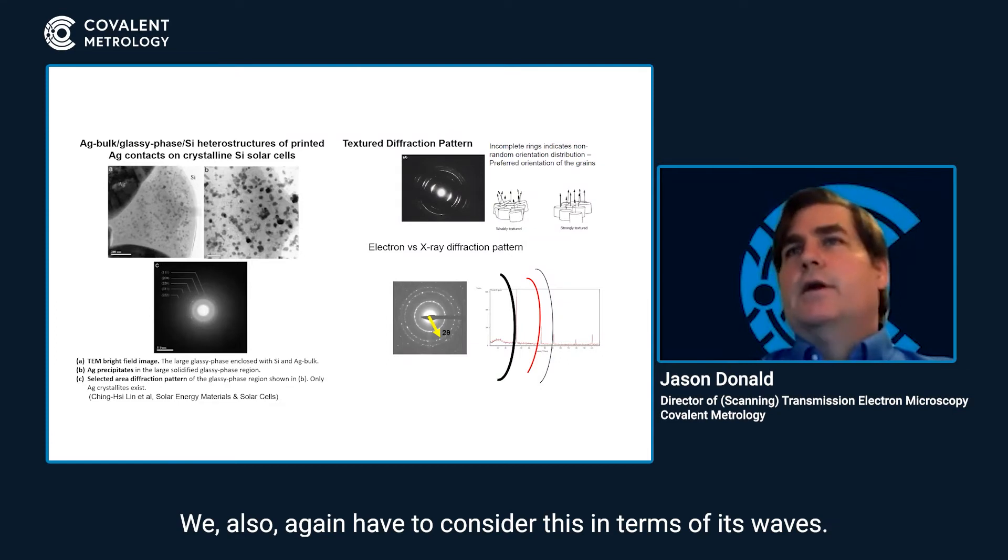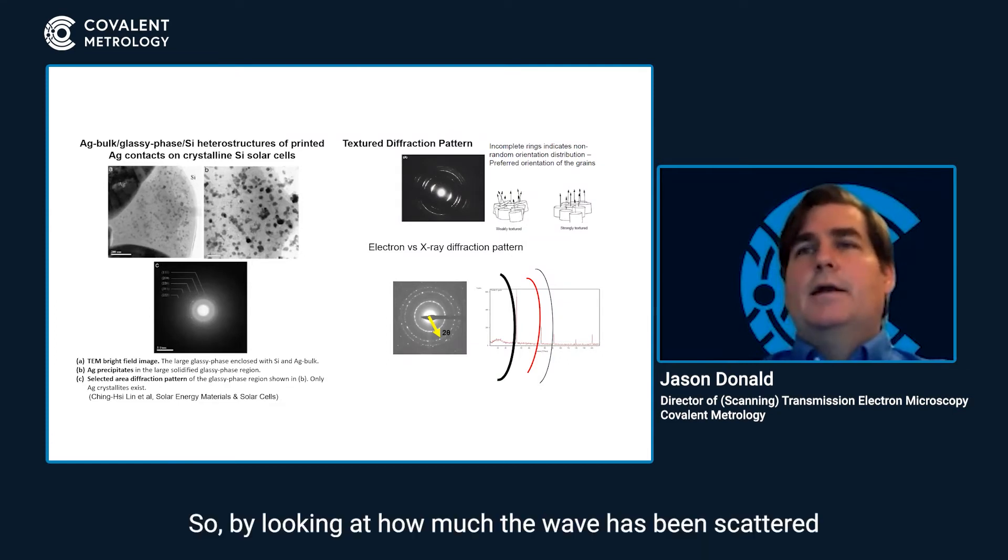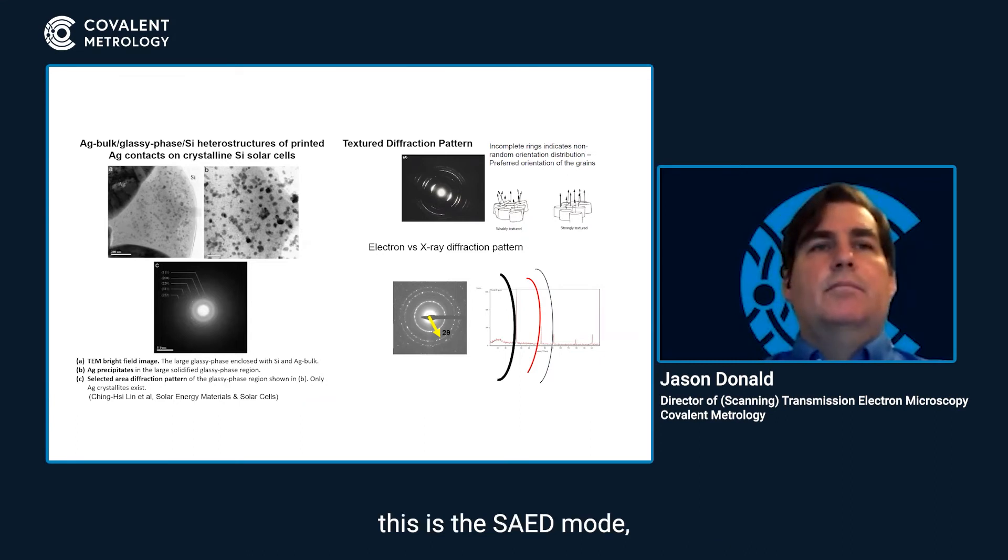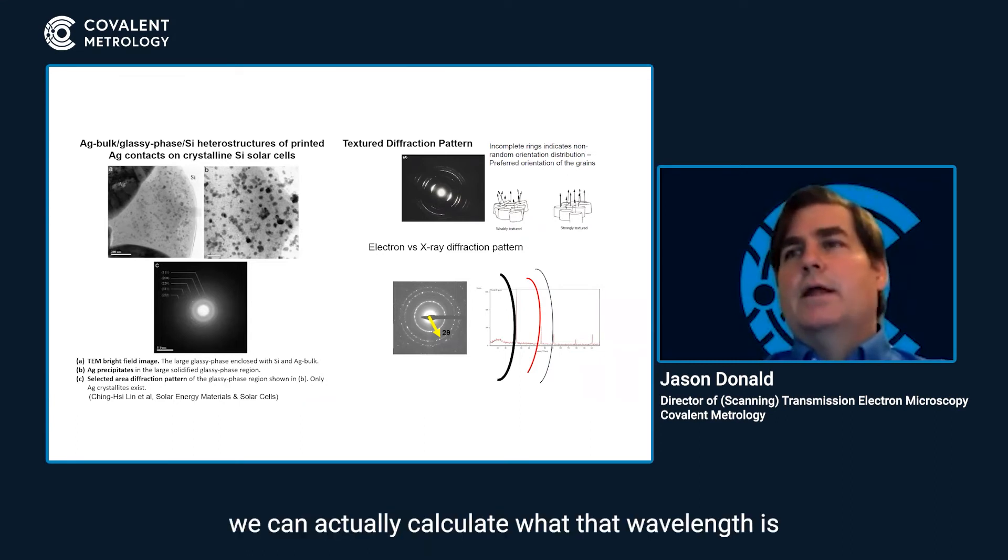We also have to consider this in terms of its waves. So by looking at how much the wave has been scattered from the blocking aperture or the blocking beam, this is the SAED mode, we can actually calculate what that wavelength is and that can give us direct information about the chemistry of the sample and what elements are in that sample.